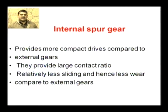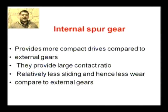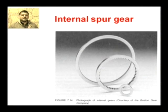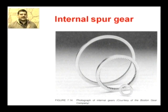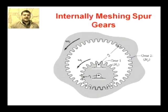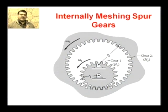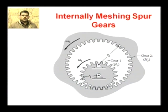The next type of gear is the internal spur gear. In this arrangement, teeth are formed on the inside of the outer gear, and the inner gear with external teeth rotates inside it. In this arrangement, the rotation of both gears is in the same direction.